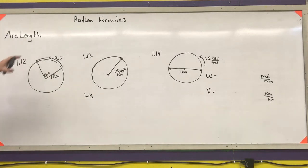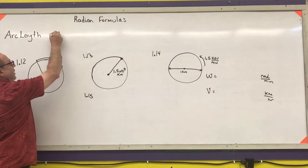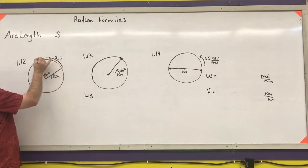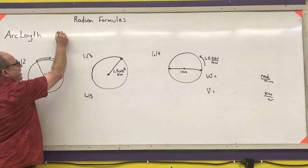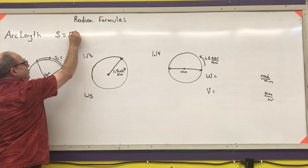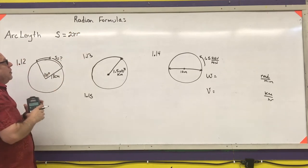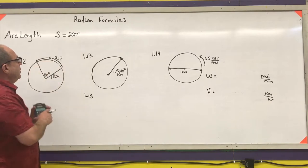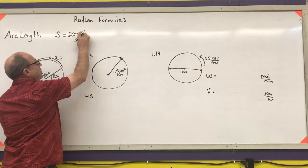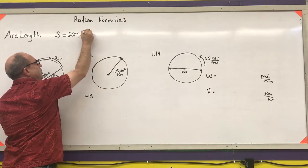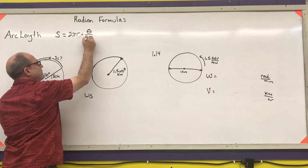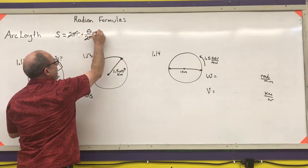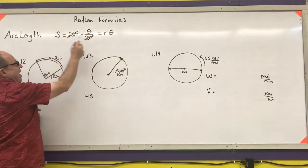The first formula we need is for arc length, abbreviated as S. Arc length is how far you travel around a circle. The arc length equals a whole circle — from geometry, the circumference is 2πr — times how far you went around the circle. Because we're going around the circle in radians, that fraction is your angle divided by 2π radians. The 2π's cancel and you get S equals rθ, and that means θ is in radians.